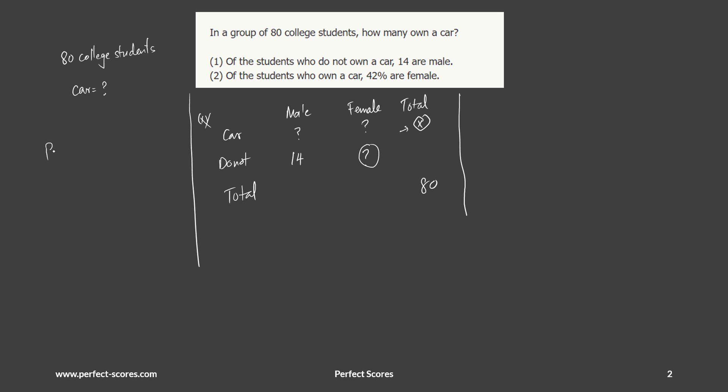So it's either answer option B, C, or E. Moving on to the second statement, it says of the students who own a car, 42 percent are female. So that means this one is 42 percent of x, that means this one is 58 percent of x.